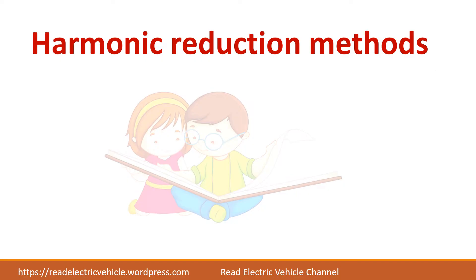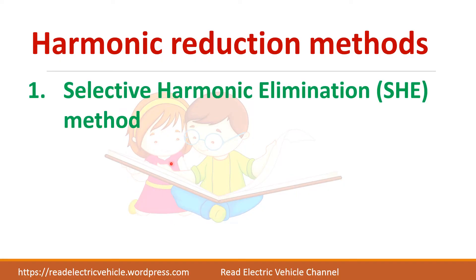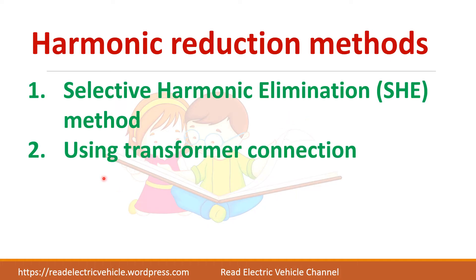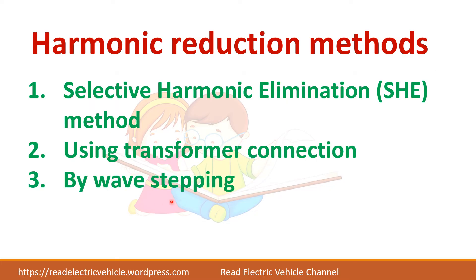So there are different harmonic reduction methods. We will see some of them. One of the widely used methods is the selective harmonic elimination method. Or you can use transformers to reduce particular harmonics. You can also get a stepped wave output from an inverter to reduce the harmonics.